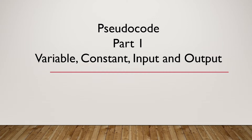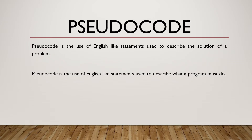In today's lesson, we are going to see what is a variable, a constant, input and output in pseudocode. To begin with, we are going to see what is pseudocode. Pseudocode is the use of English-like statements used to describe the solution of a problem. Pseudocode can also be expressed as the use of English-like statements used to describe what a program must do.